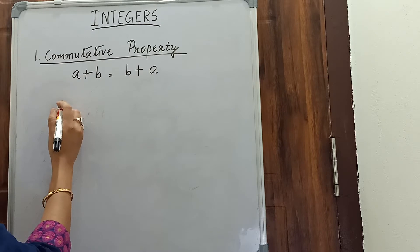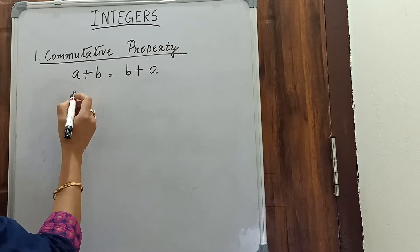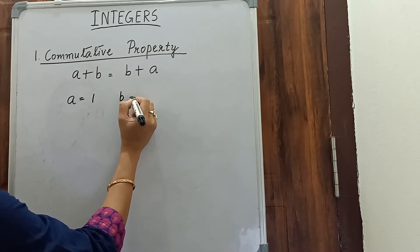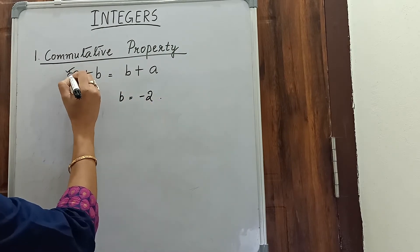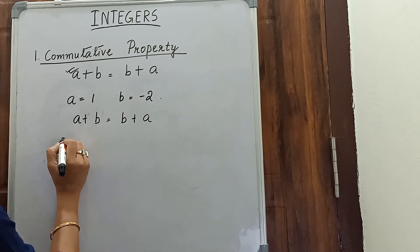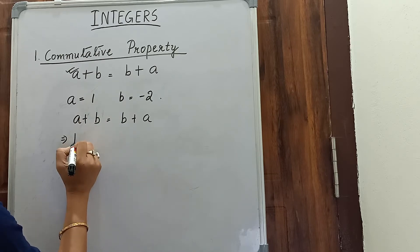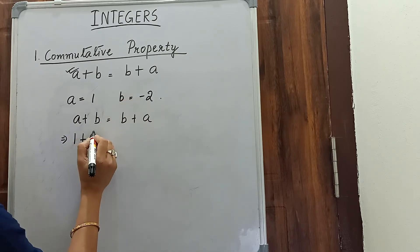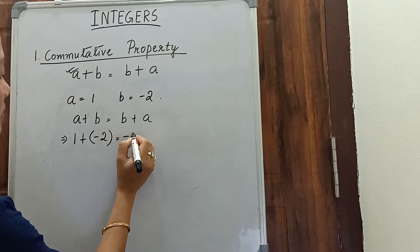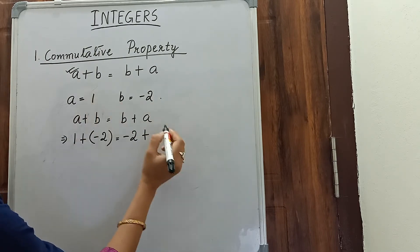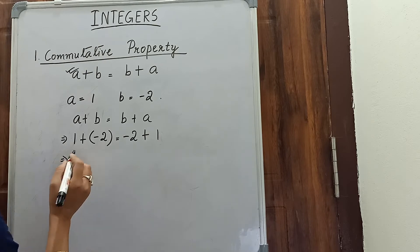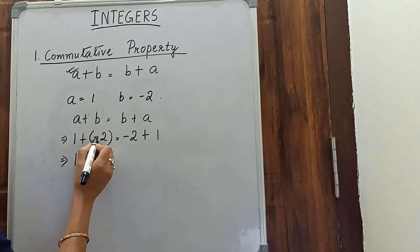We can take positive integers or negative integers, so let us take both. Let a equals 1 and b equals minus 2. We'll apply the formula: a plus b equals b plus a. So we have 1 plus (minus 2) on the left-hand side, equals (minus 2) plus 1 on the right-hand side.